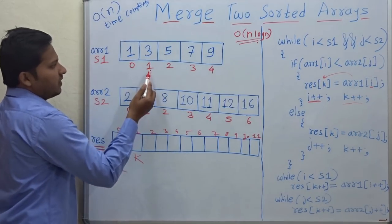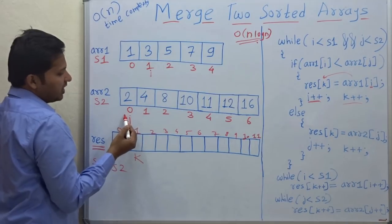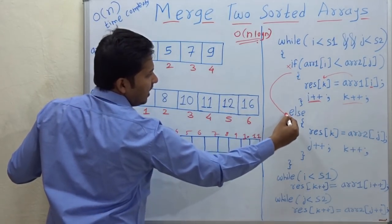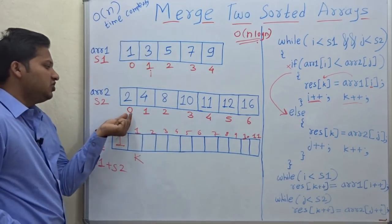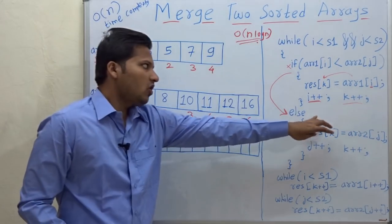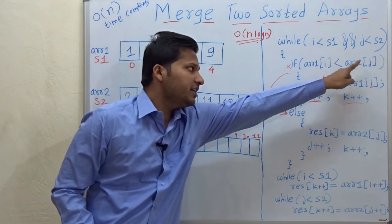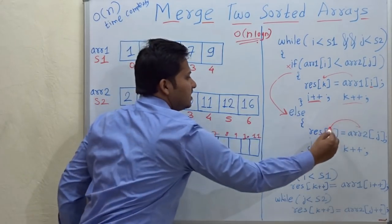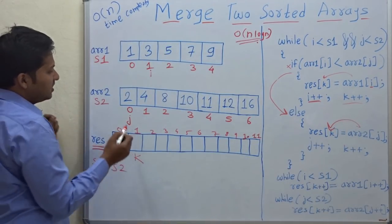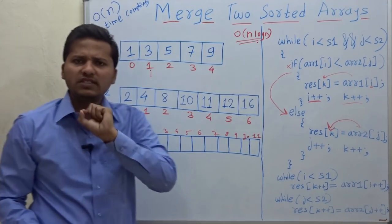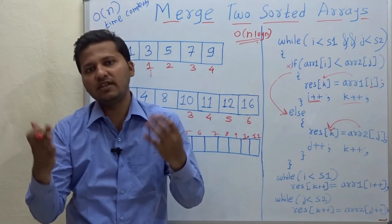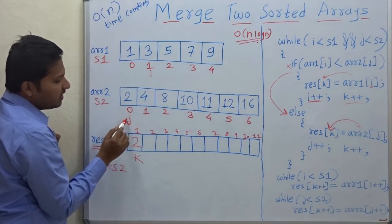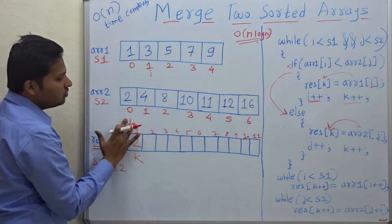Let's solve the problem with this procedure. Check whether array1[i] is less than array2[j]: is 3 less than 2? No, so this condition is not satisfied and we go to else. That means the element at j is lesser. Inside else, array2[j] is shifted to the resultant array — array2[j] is 2. The simple rule is that the lesser element is shifted. So 2 is shifted, and j is incremented.